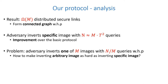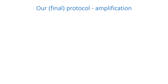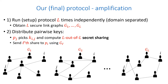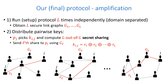The question is: how can we make inverting an arbitrary image as hard as inverting a specific image? We call the previous protocol the setup protocol. We now run the setup protocol L times independently using domain separation of the random oracle in order to obtain L secure link graphs. In order to distribute pairwise keys, a player j that wants to communicate with a player i picks a key and computes an L-out-of-L secret sharing of that key.